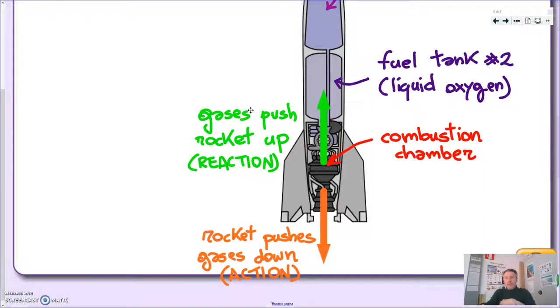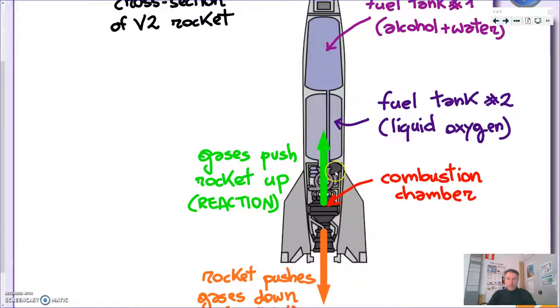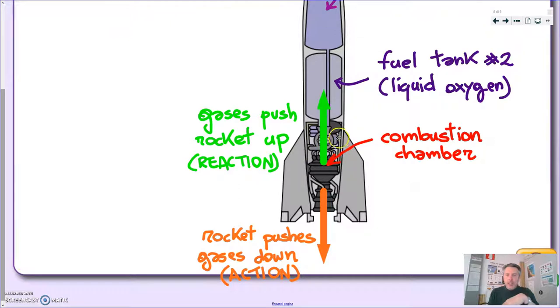And the great thing of this kind of propulsion, it works everywhere. You don't need an atmosphere like in propeller planes. You need to have a propeller. You need of course air through which the propeller can push. Now in class we're going to see this a little bit more in detail. We're going to see in general how to identify action-reaction pairs.